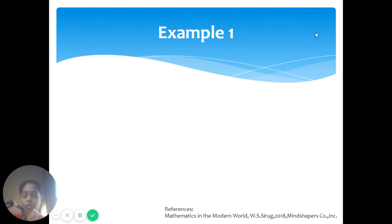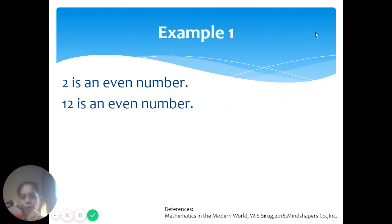We move on with examples for inductive reasoning. First, we have the statement, 2 is an even number. Next, 12 is an even number. Then 22 is an even number.